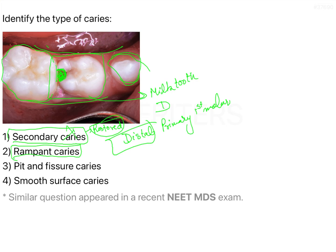Rampant caries is a type of caries that is acute and very extensive in nature, involving a lot of teeth. Since the other teeth here are very healthy and only one tooth has the problem, we can exclude rampant caries as well. As for pit and fissure caries — this lesion is on the proximal surface, the distal surface area, not a pit or fissure — so we can rule that out too, and choose smooth surface caries.